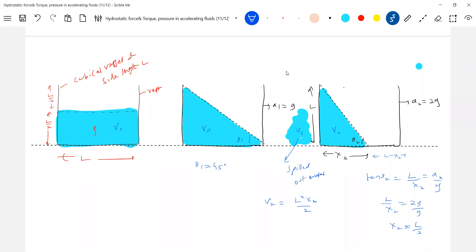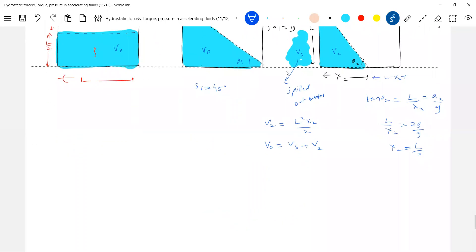How to calculate spilled out volume? Overall volume should be equal to water spilled out plus water inside the tank, plus water spilled out. So this is the initial volume, initial amount of water.